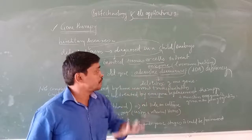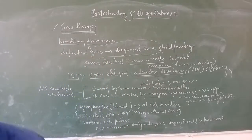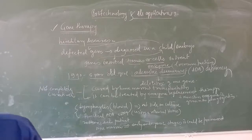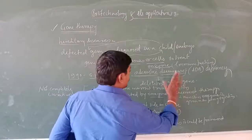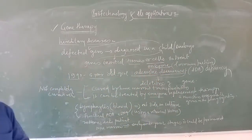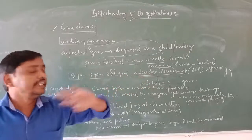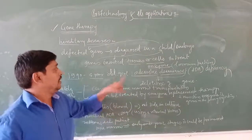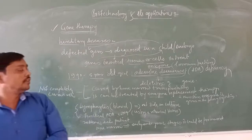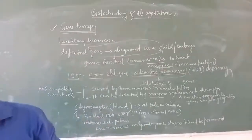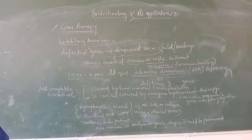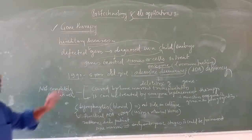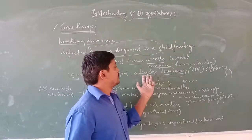ADA deficiency is caused by the deletion of one gene — the gene responsible for producing the Adenosine Deaminase enzyme. It is the deletion of this specific gene for ADA that leads to the deficiency.